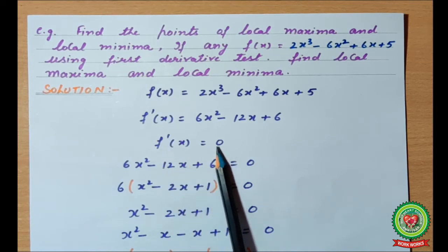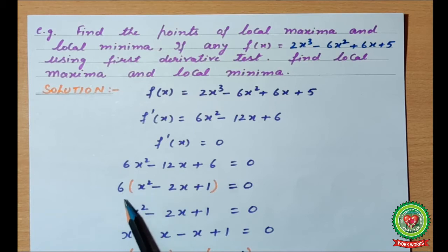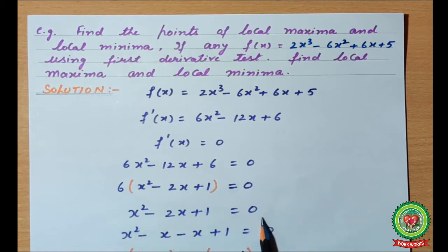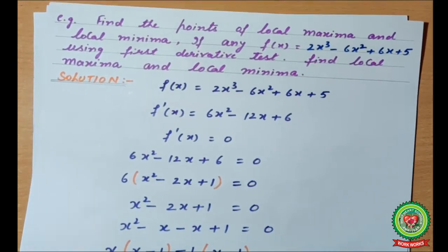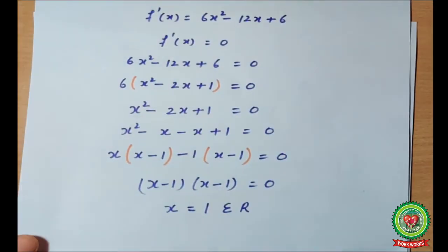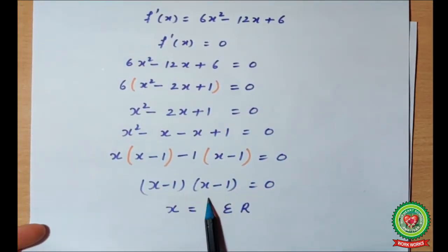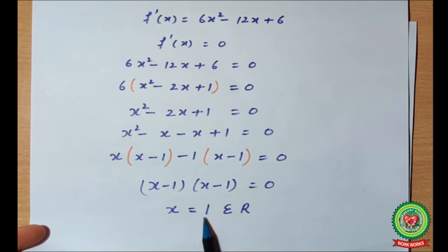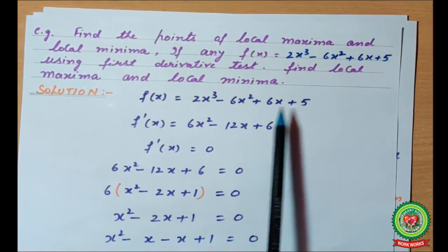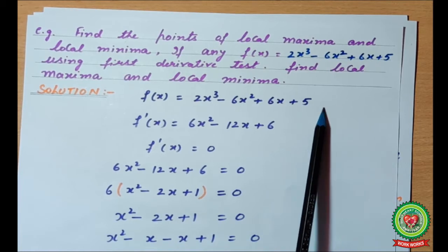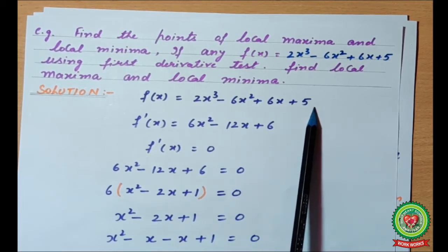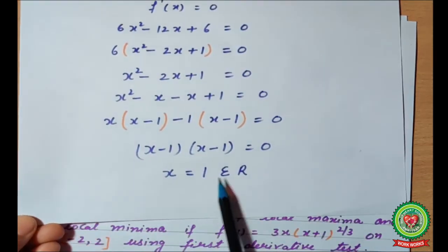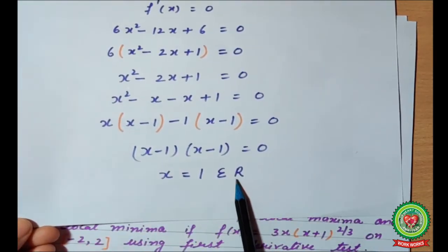According to the third step, we put f'(x) equal to 0 and find the value of x. Taking 6 as a common factor gives x² - 2x + 1 = 0. Using the sum-product method, this factors as (x - 1)(x - 1) = 0, so x = 1. Since no domain is given, the function belongs to the real numbers, and 1 also belongs to the real numbers.